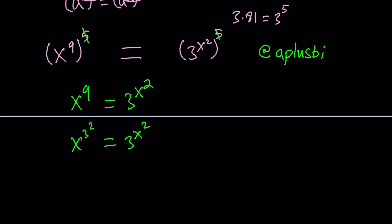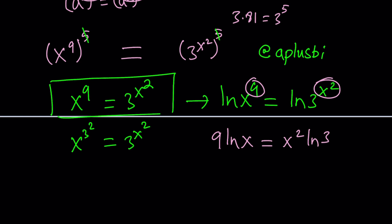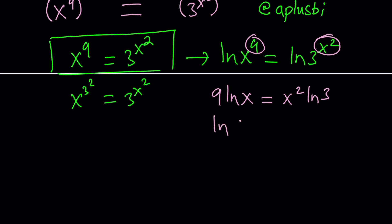I mean, if you don't see what I'm talking about, let's write it in a different form. I can take it from here and just natural log both sides, and then this is going to bring down the exponents. So, this is going to give me 9ln(x) = x^2 ln(3). And then put the ln(x) and x^2 together, like variables on the same side, and numbers on the other.